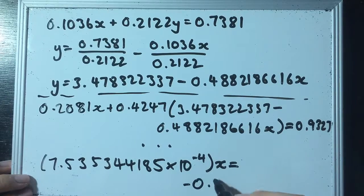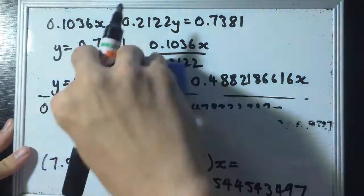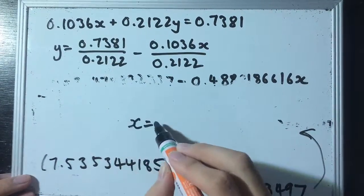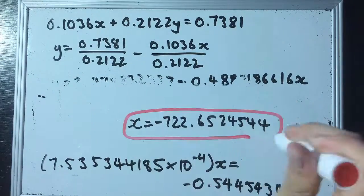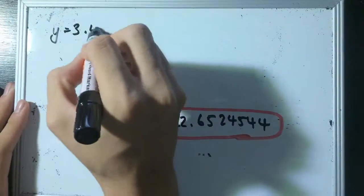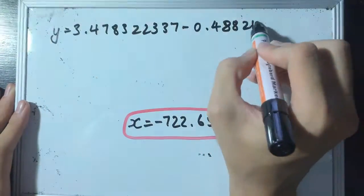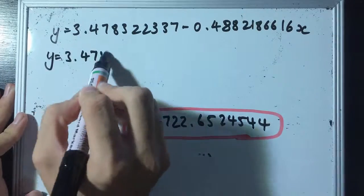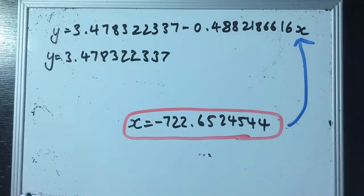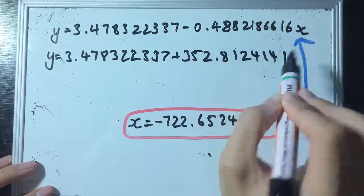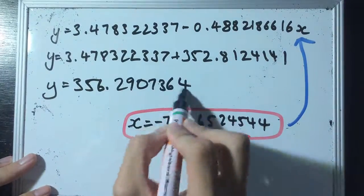which I'm not going to show in full here, what we'll find is that x will come out to negative 722.6524544. And we take this value of x and substitute it into the expression for y, we'll find that y equals 356.2907364. Again, another different answer.